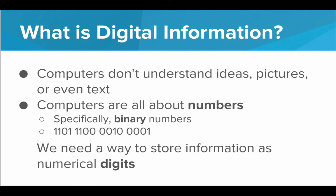So a big part of computer science is finding various ways to store information as numerical digits. Once we're able to find a good way to store information as digits, we now have digital information. And that's nice because then we can use computers to manipulate this digital information, store it, send it, etc.